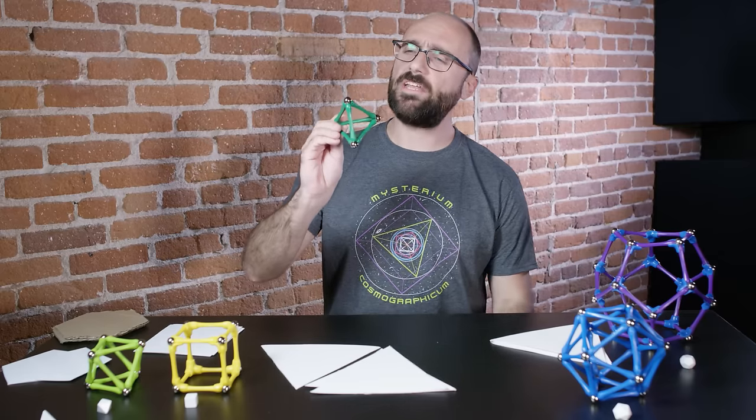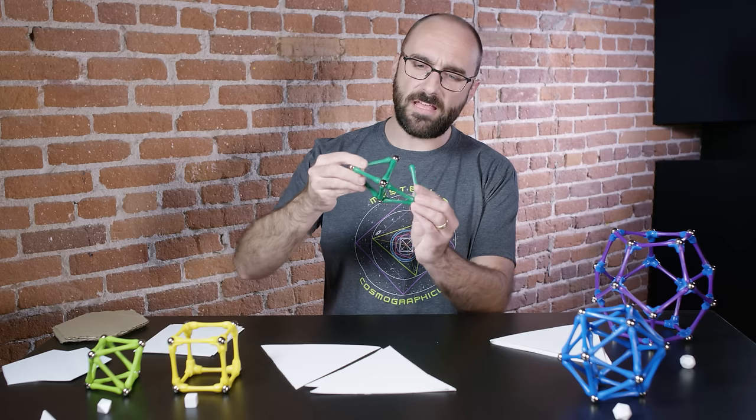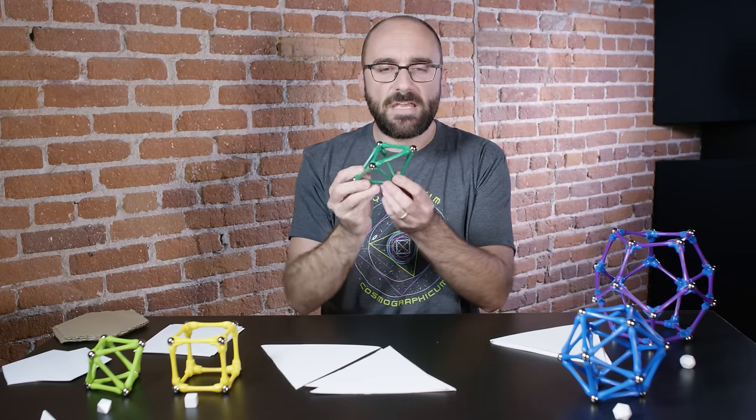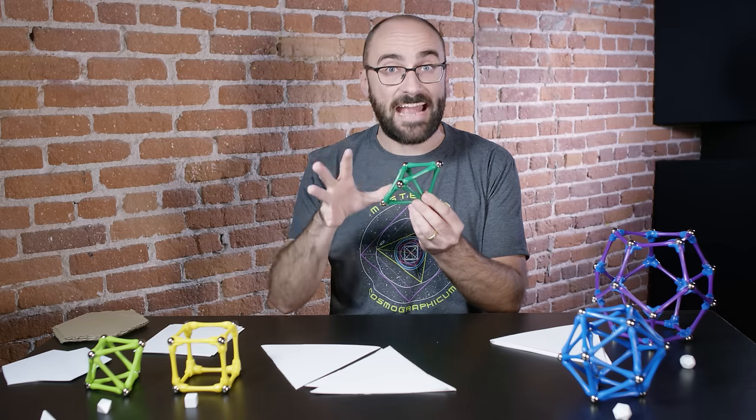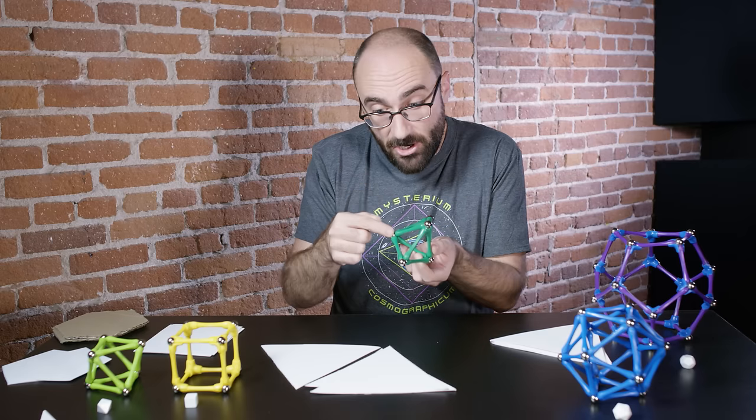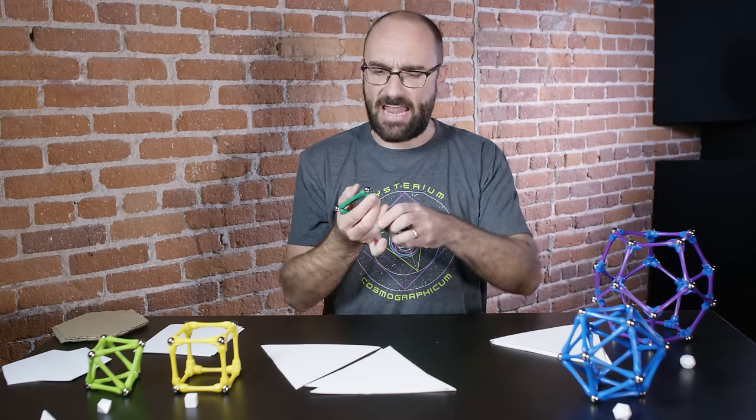Now you might be wondering, why can't you just take three more equilateral triangles, connect them all like this, and call this a platonic solid? You can't, because the vertices aren't all exactly the same. Here three triangles meet, but here, and here, and here, four meet. Don't waste my time with that, get out of here.